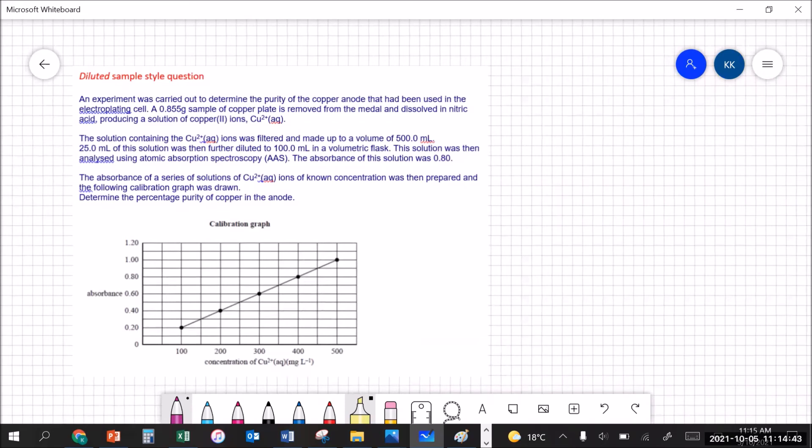Let's have a look at a diluted sample style question. Really the most difficult part of these questions is just reading the big paragraph of information and extracting the information that you need. An experiment was carried out to determine the purity of the copper anode that had been used in an electroplating cell. A 0.855 gram sample of the copper plate is removed and dissolved in nitric acid to produce a solution of copper ions. This solution is made up to a volume of 500 mils. So we know that the total amount of copper is sitting in that 500 mils. 25 mils of that solution was then further diluted to 100 mils in a volumetric flask. So that's a four times dilution.